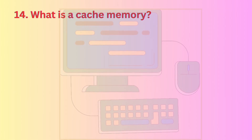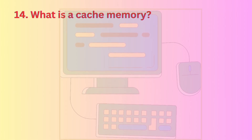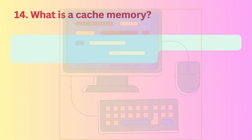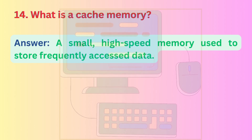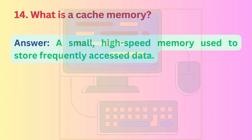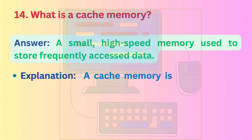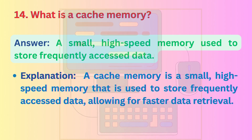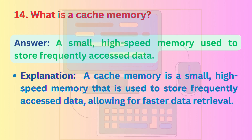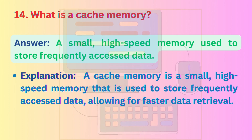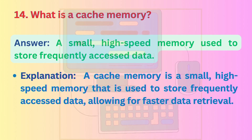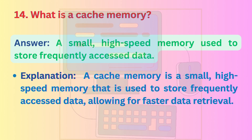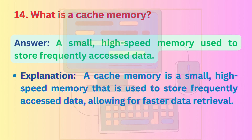Question 14: What is cache memory? Answer: A small, high-speed memory used to store frequently accessed data. Explanation: Cache memory is a small, high-speed memory that is used to store frequently accessed data, allowing for faster data retrieval.